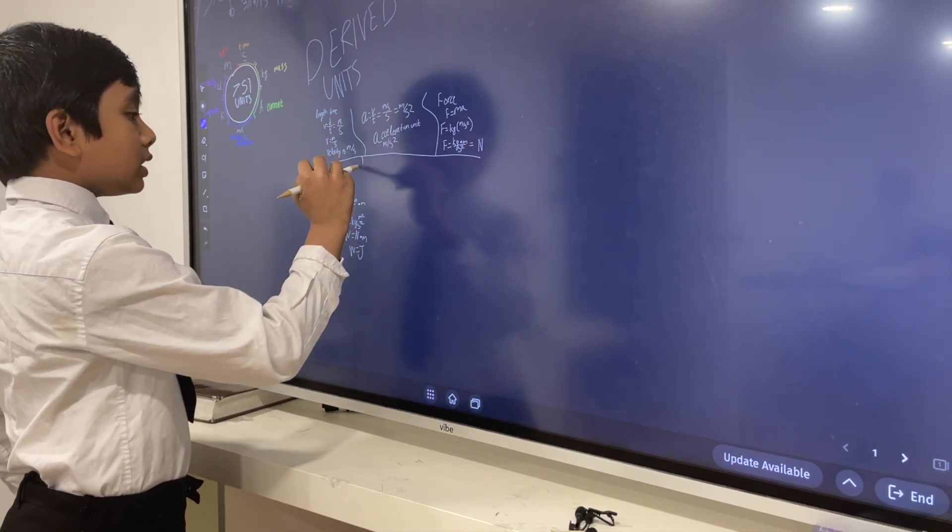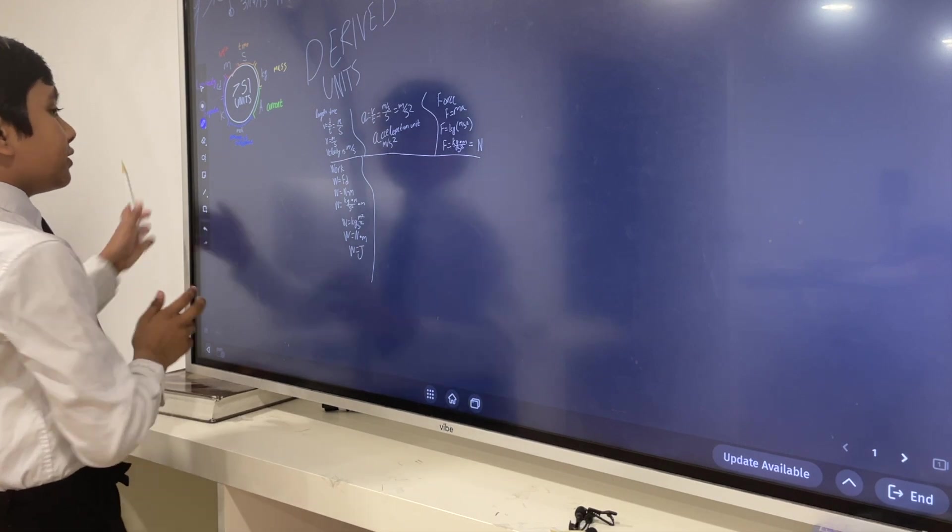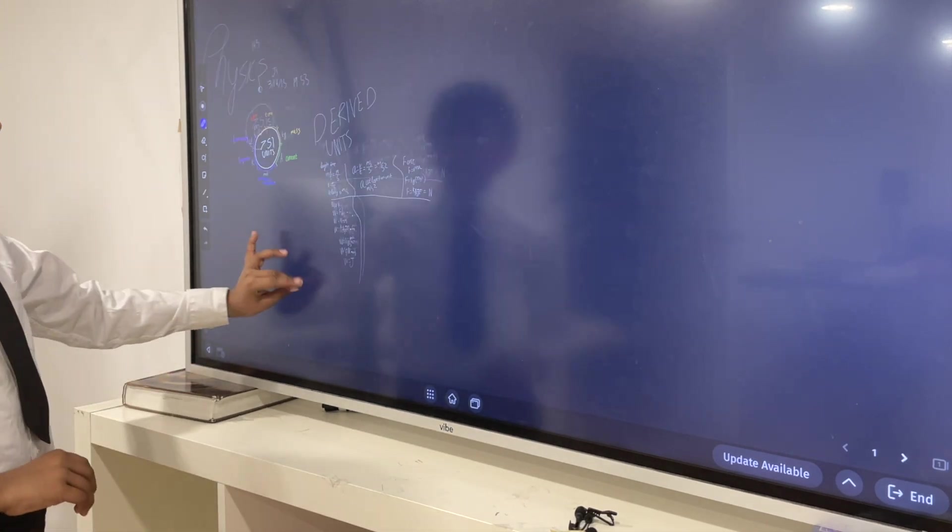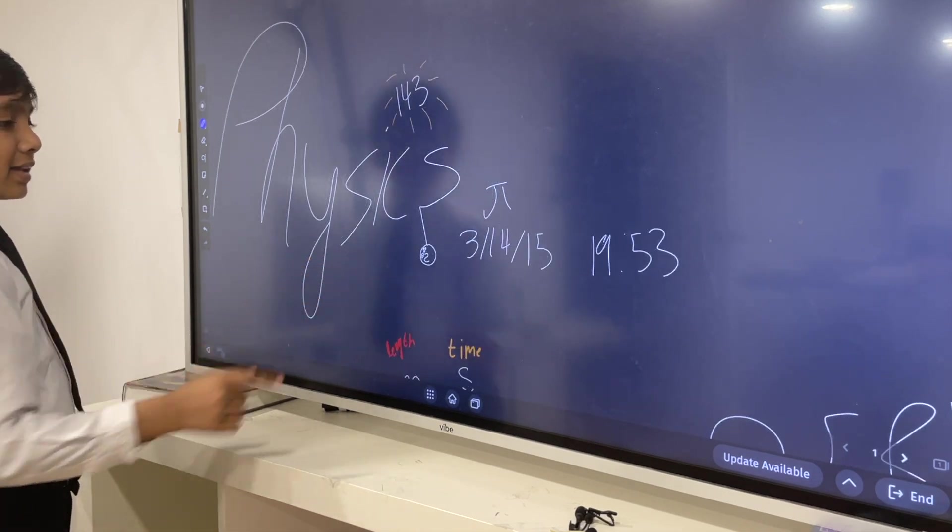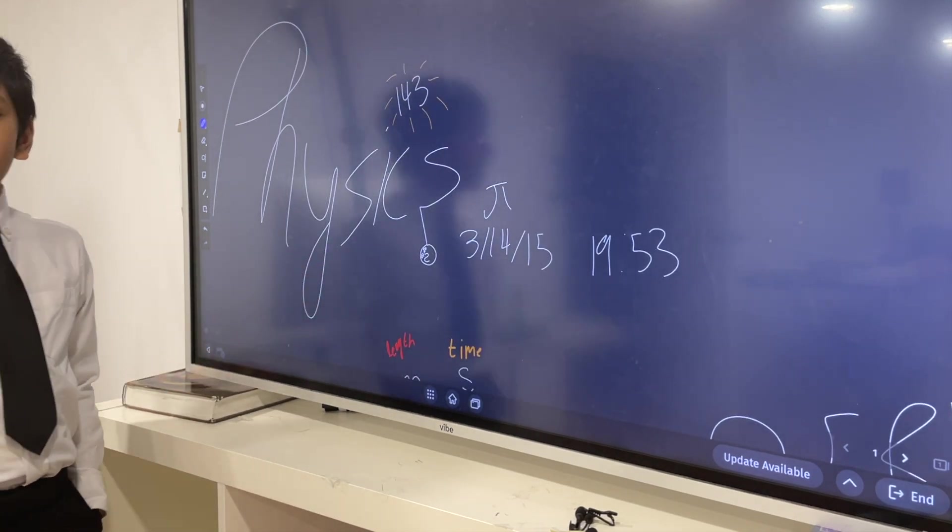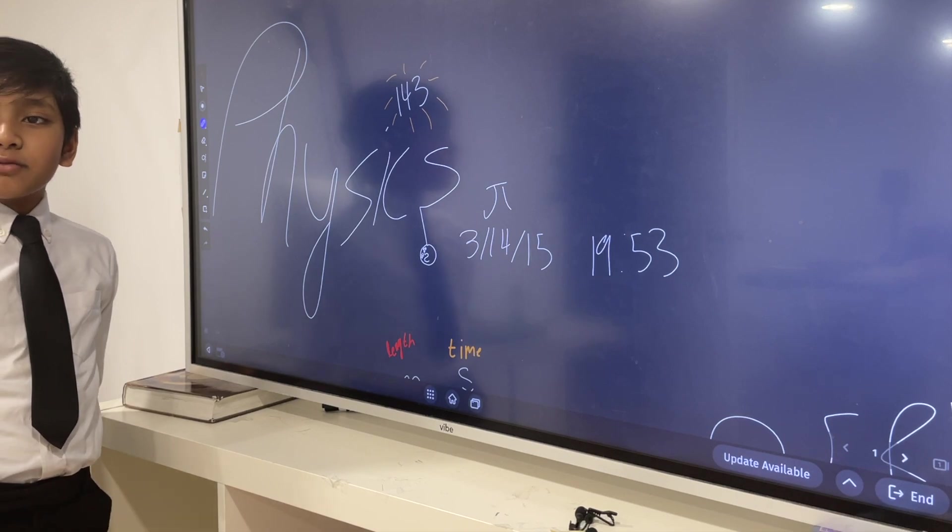So those are just a few examples of derived quantities, or derived units. Now, that's really all we have for today. Thank you everybody for watching, and we'll see you next time.